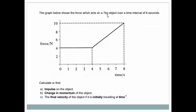The force which acts on a 7 kg object over a time interval of 8 seconds. So we have constant force of 4 newton acting for the initial 4 seconds, and then it increases uniformly to 10 Newton over the remaining 4 seconds.